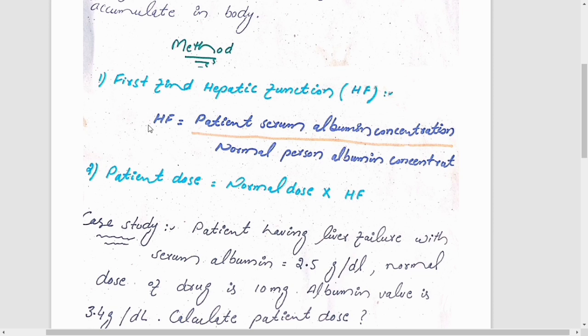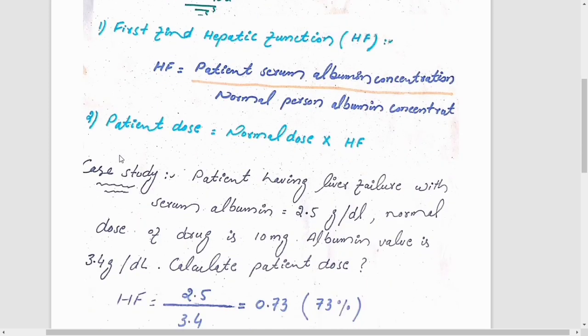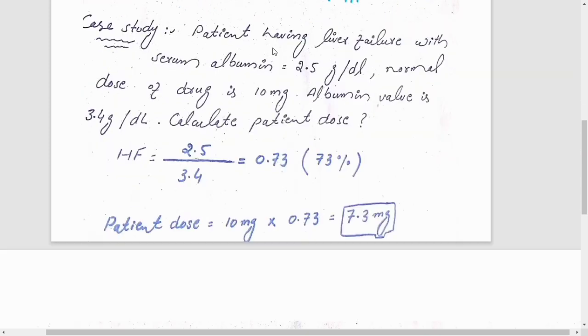First we will find the HF, then we will do patient dose adjustment. Patient dose is equal to normal dose multiplied by hepatic function, which can be found from the formula.